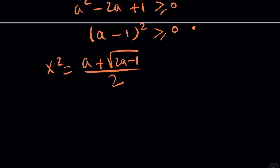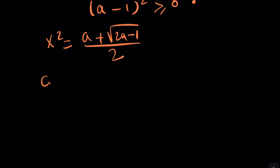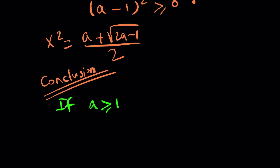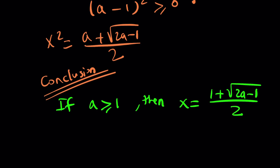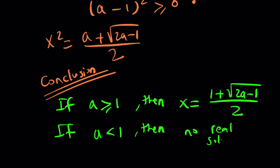So let's write the final conclusion. If a is greater than or equal to 1, then x equals (1 + √(2a−1)) / 2. If a is less than 1, then there are no real solutions. This brings us to the end of this video — thank you for watching, I hope you enjoyed it.